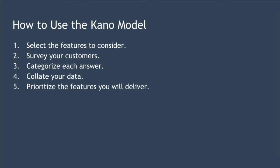So now you understand the theory of the Kano model — how do you actually use it? Here's a five-step process: first, select the features you want to consider; second, survey your customers in the Kano way; third, categorize each answer according to a table; fourth, collate your data; and finally, prioritize the features you will deliver.